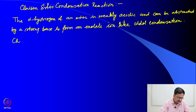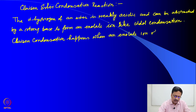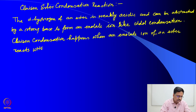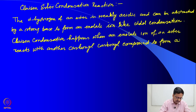This Claisen condensation happens when an enolate ion of an ester reacts with another carbonyl compound to form a beta-keto ester.